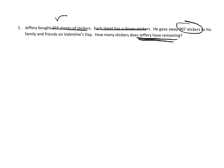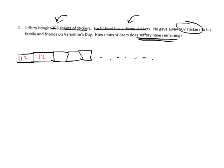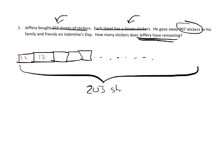He has 203 sheets and each sheet has a dozen stickers. So here's a sheet with a dozen stickers, here's another sheet with a dozen stickers, and so on — we keep going. All together we're going to have 203 sheets, and inside each sheet is a dozen stickers all the way down. Once we've figured that out, we know that's 203 times 12. That's pretty straightforward.